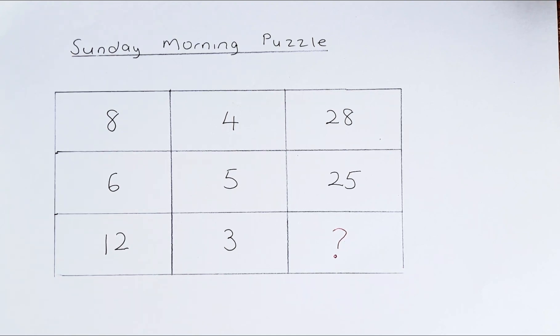On the first row, we have 8, 4, and 28. On the second row, we have 6, 5, and 25. And the final row, we have 12, 3, and a question mark.